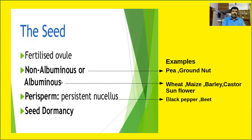A seed consists of a seed coat, then embryo, etc. The detailed structure of seeds you have learned in class plus one in the topic of morphology of angiosperms. Seeds can be classified into two categories — non-albuminous and albuminous — based on the presence and absence of residual endosperm.